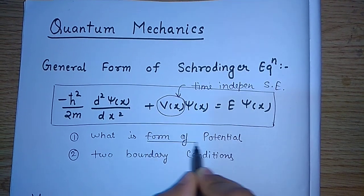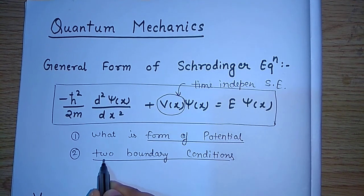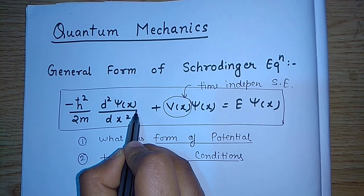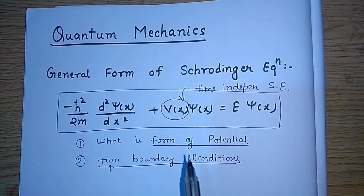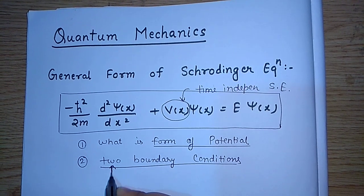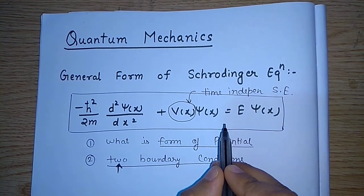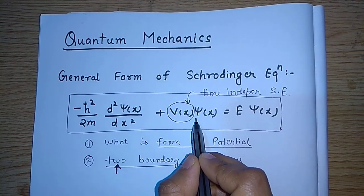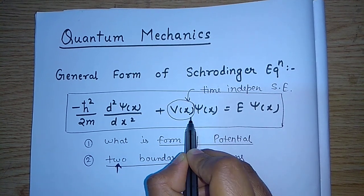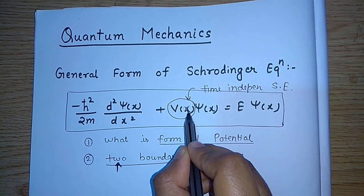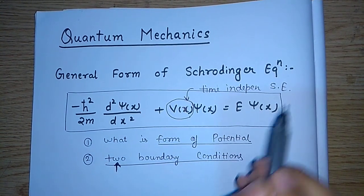Secondly, we should know the two boundary conditions — why two? Because the Schrödinger equation is a second-order differential equation, and a second-order differential equation requires two boundary conditions. Now, whether this equation is time-independent or time-dependent depends on the potential form. Here the potential depends only on position, not on time, so this is the time-independent Schrödinger equation.